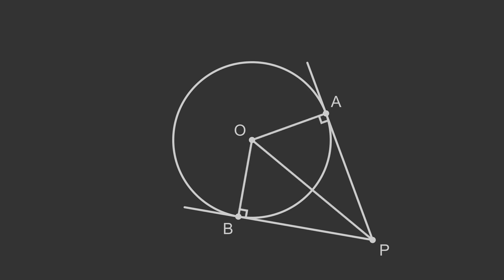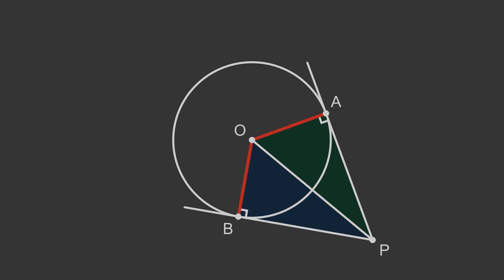We have added extra lines to create two triangles. Triangle AOP is filled in green and triangle BOP is filled in blue. From the radius and tangent rule, we know that angles A and B are both right angles. Both triangles have the line OP as their hypotenuse, so the hypotenuses of both triangles are equal. The sides OA and OB are both radii of the circle, so they are also equal. Since both triangles are right-angled, with the same hypotenuse and one other side equal, they are congruent by the RHS rule. This means that the other sides AP and BP are equal, proving that the tangents are equal.